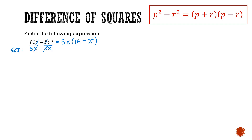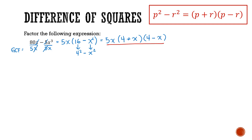Now let's factor 16 minus x squared further. 16 is 4 squared, and x squared is x squared, so we indeed have a difference of two squares. Keeping the 5x factor we already pulled out, we apply the difference of squares: square root of 16 is 4, and square root of x squared is x. So the final answer is 5x times the quantity 4 plus x times 4 minus x.